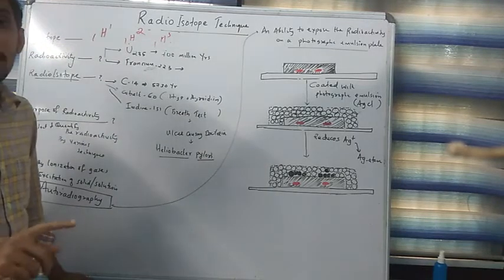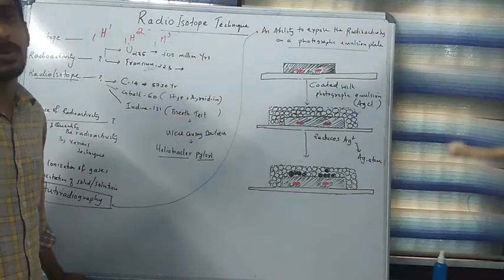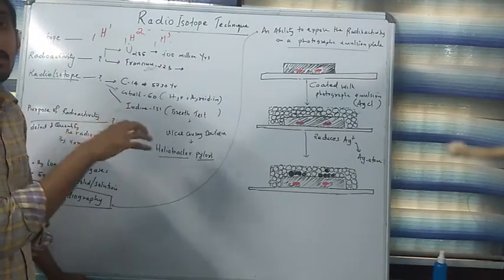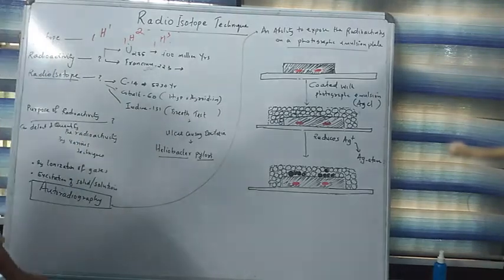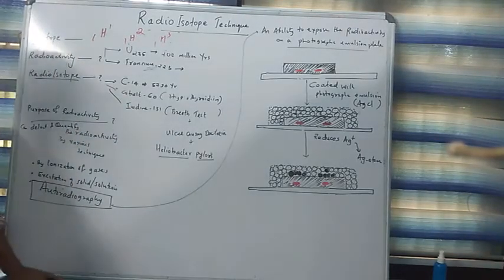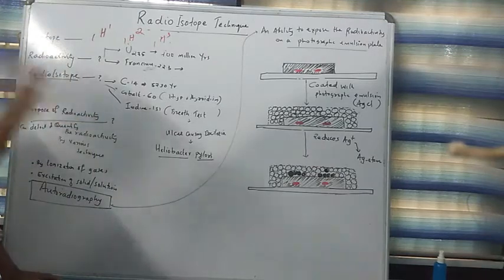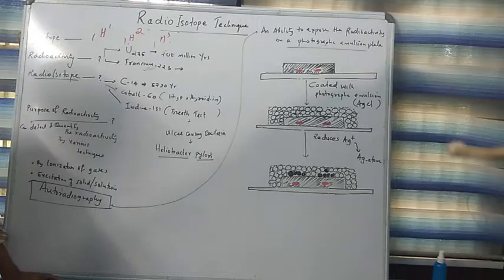Mass number means neutron plus proton, but atomic number means number of protons only. That is about isotopes. Like that, in nature, we have different kinds of isotopes.